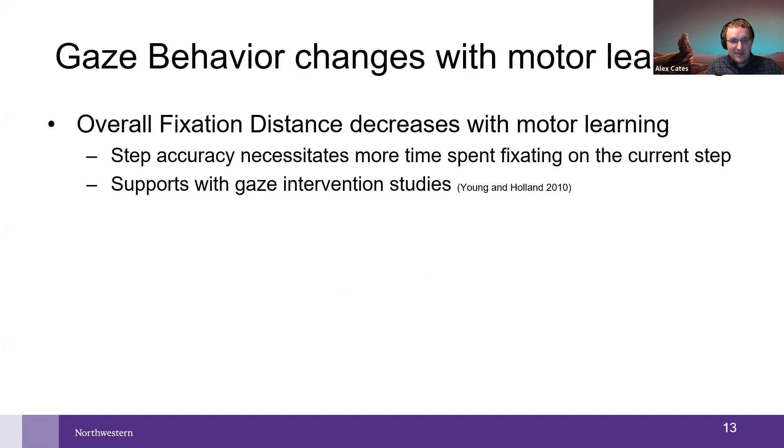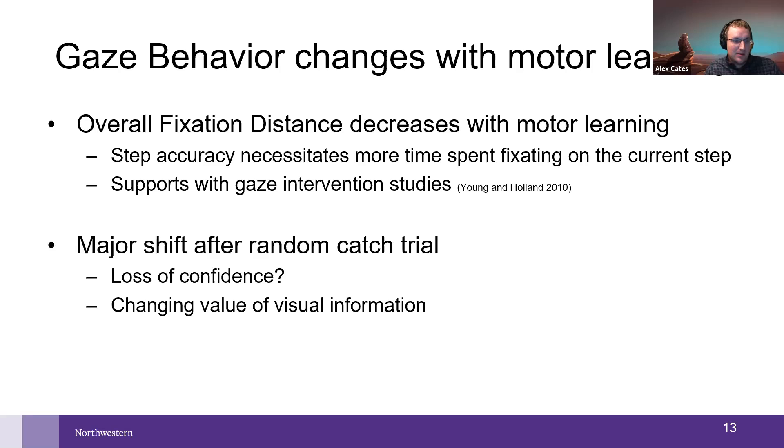Putting it all together, it seems that overall fixation distance decreases with motor learning, particularly block to block. This would suggest that people are needing to spend more time fixating on the current step. This is actually kind of in support of the current approaches that some gaze intervention studies are doing. Young and Hollands is one—they're trying to intervene in older adults to have them change how they're looking to try and improve their gait. Though they are not measuring the gait changes at each subsequent point, still just before and after, so it's still lacking that understanding of what's going on. There's also this major shift happening after that random catch trial. I'm a little confused as to why that might be. I don't have a good idea and I'd love to hear people's thoughts.